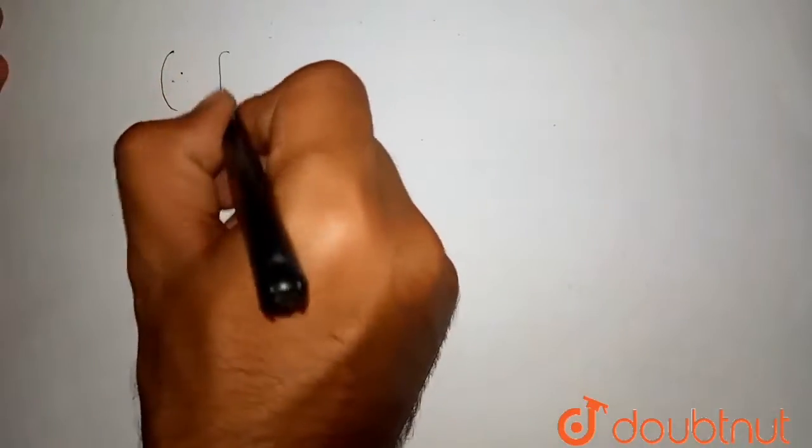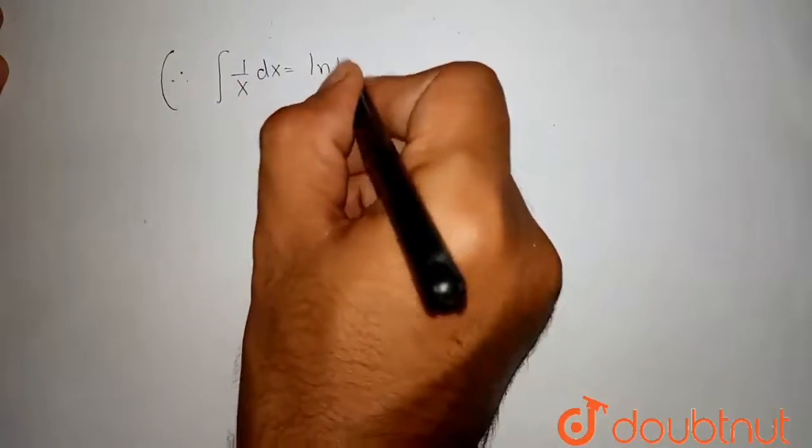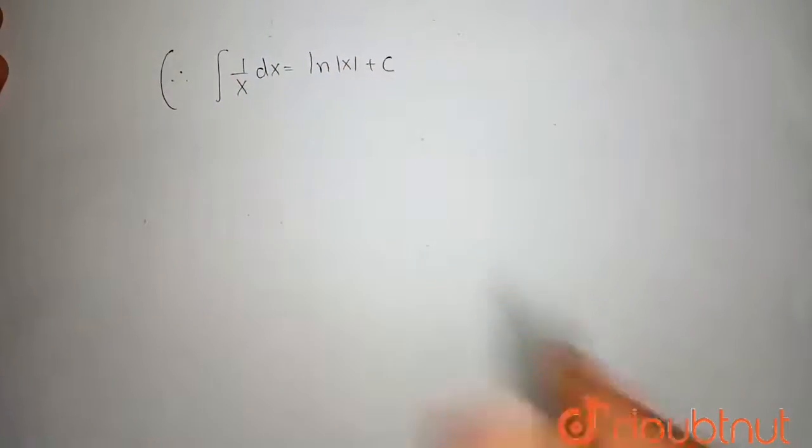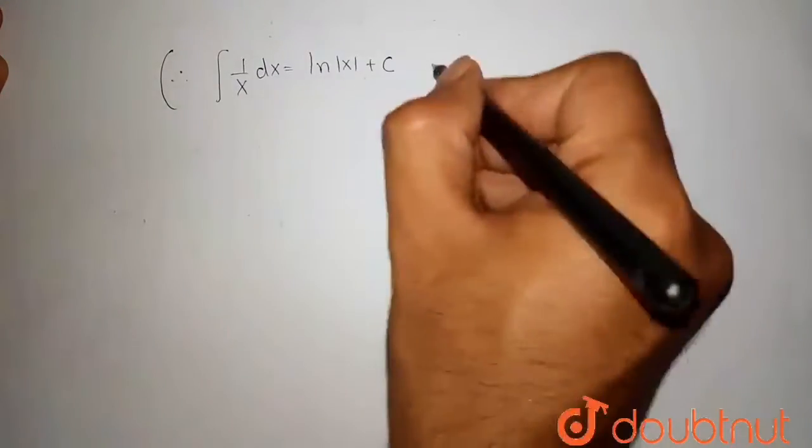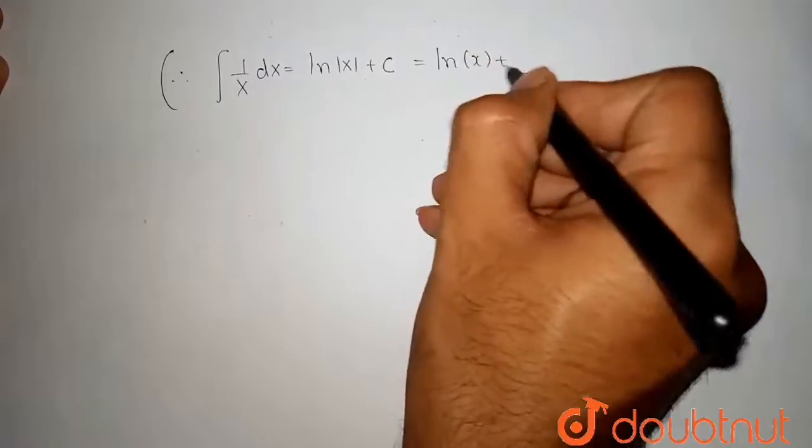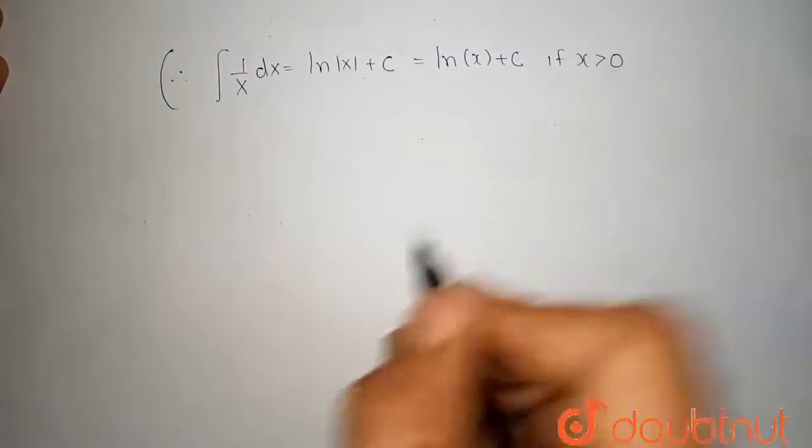Now we know that the integration of 1 upon x dx is equal to ln of mod of x plus c. Note that if x is positive, then it is also written as ln of x plus c, if x is greater than 0.